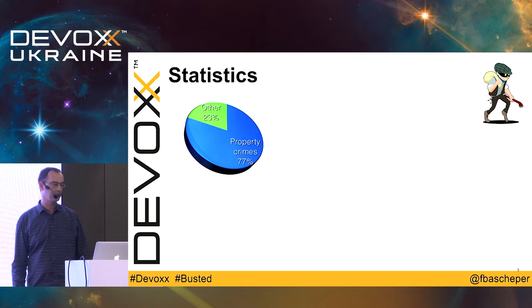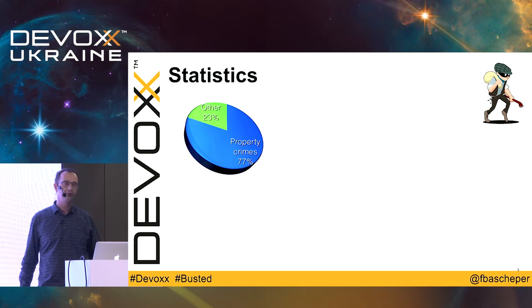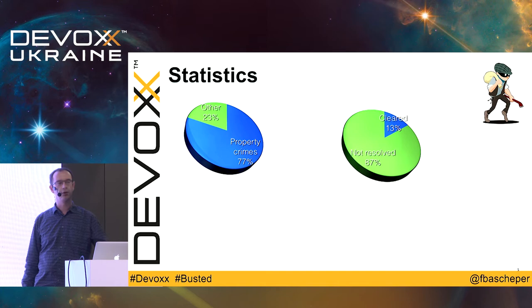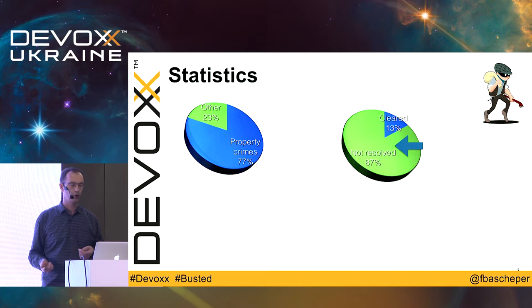First, a couple of statistics. 77% of all crimes appear to be property crimes, like petty theft, pickpockets, and burglaries. Of these property crimes, only 13% are actually being cleared by the police — usually because there's just a lack of evidence: no witnesses, nothing at all.